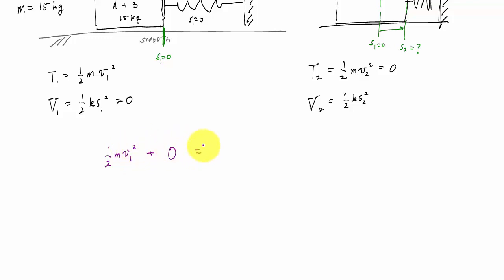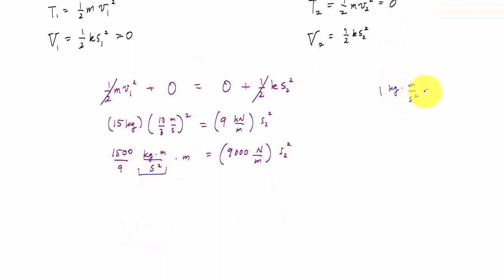So now I'm just going to plug and chug into my conservation of energy relationships. One half m v_1 squared plus zero is equal to zero plus one half K s_2 squared. The one halves cancel. The mass, 15 kilograms times 10 thirds meters per second squared is equal to K, nine kilonewtons per meter times s_2 squared. So 100 times 15, 1500 over nine kilogram meter per second squared times meter equals 9,000 newtons per meter s_2 squared. So all I did was convert. I separated so that kilogram meter per second squared is one newton.